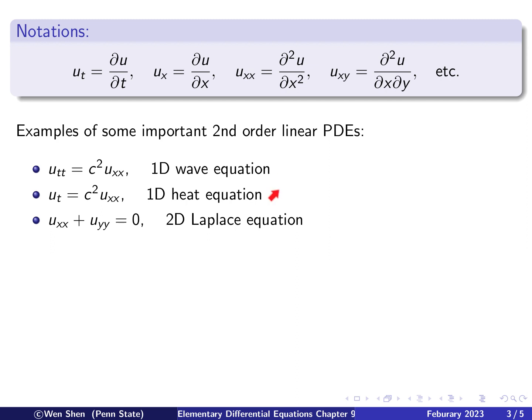So these first three equations, they're linear, because each term involves the unknown and the derivative of the unknown only in linear form. And they are also homogeneous, because there are no terms that is only a function of x and t or y.